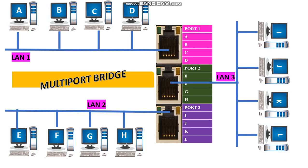If a bridge is used to connect more than two LANs, then it is called a multiport bridge. If you observe here, the bridge is used to connect three LANs, so it is called a multiport bridge. The bridge contains three tables, and each table holds information about a port number and all the stations attached to that port number.